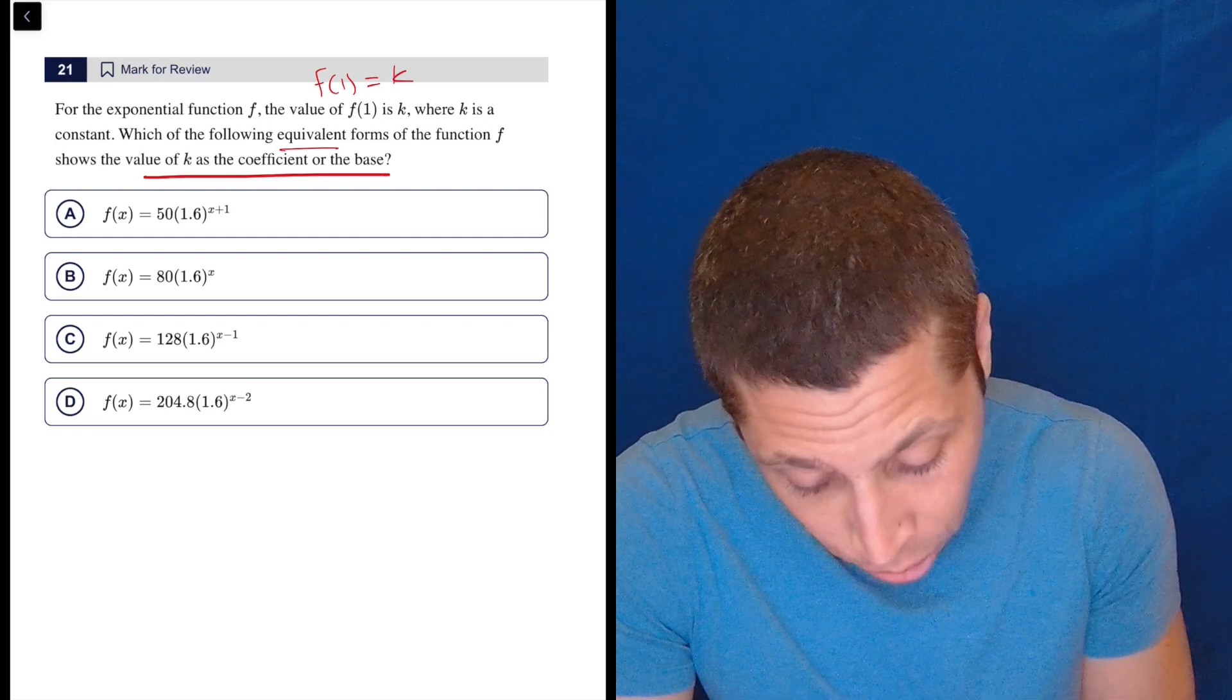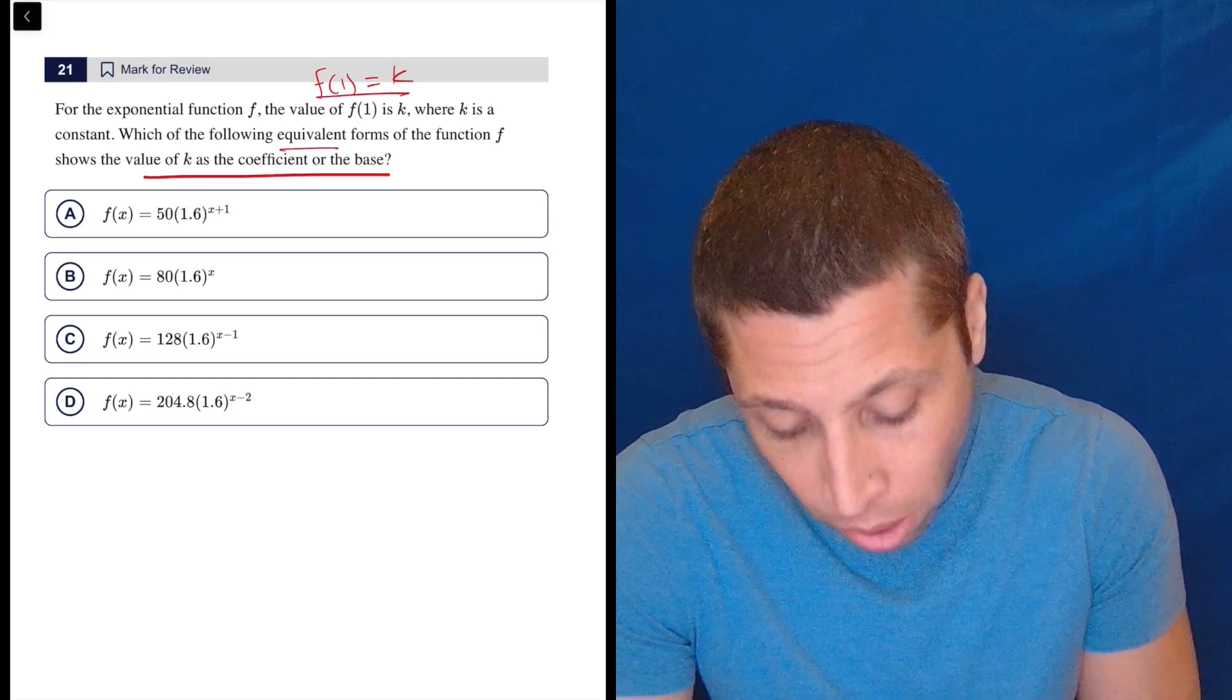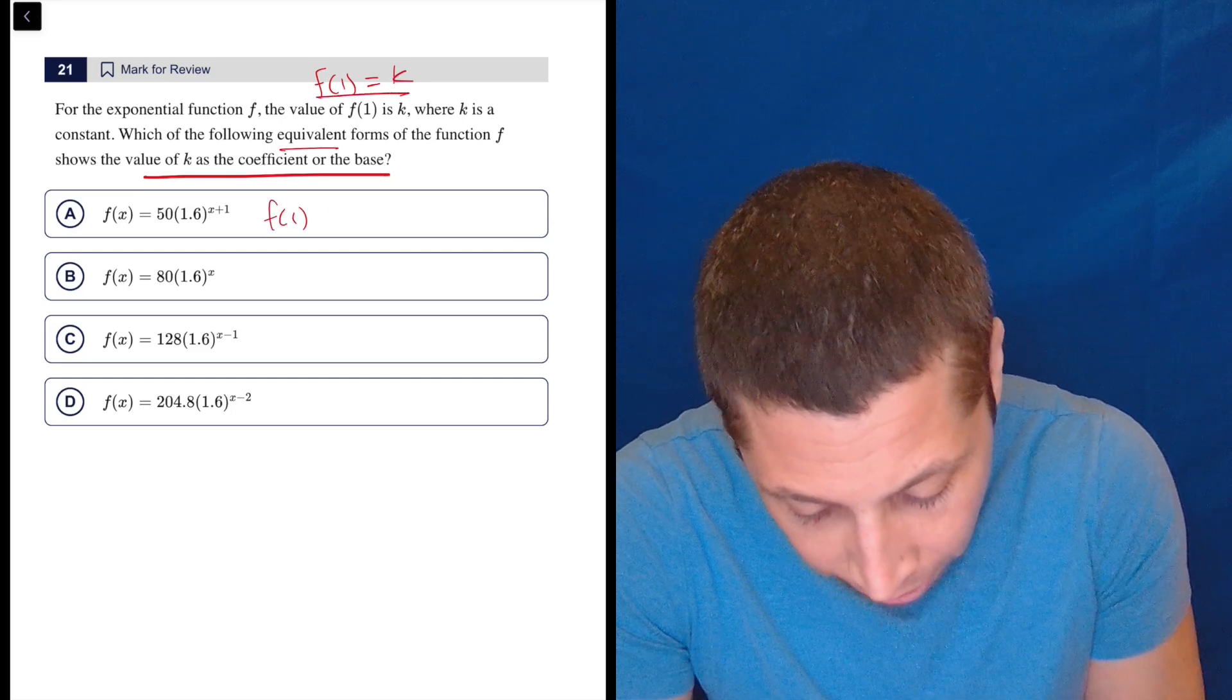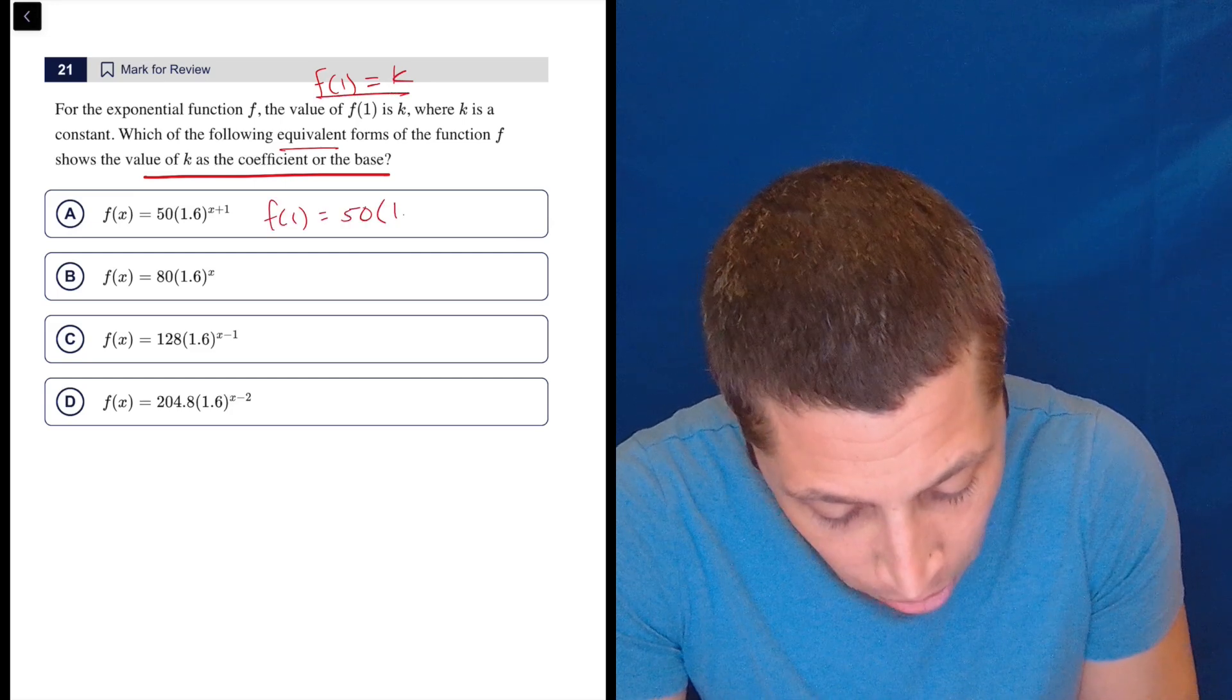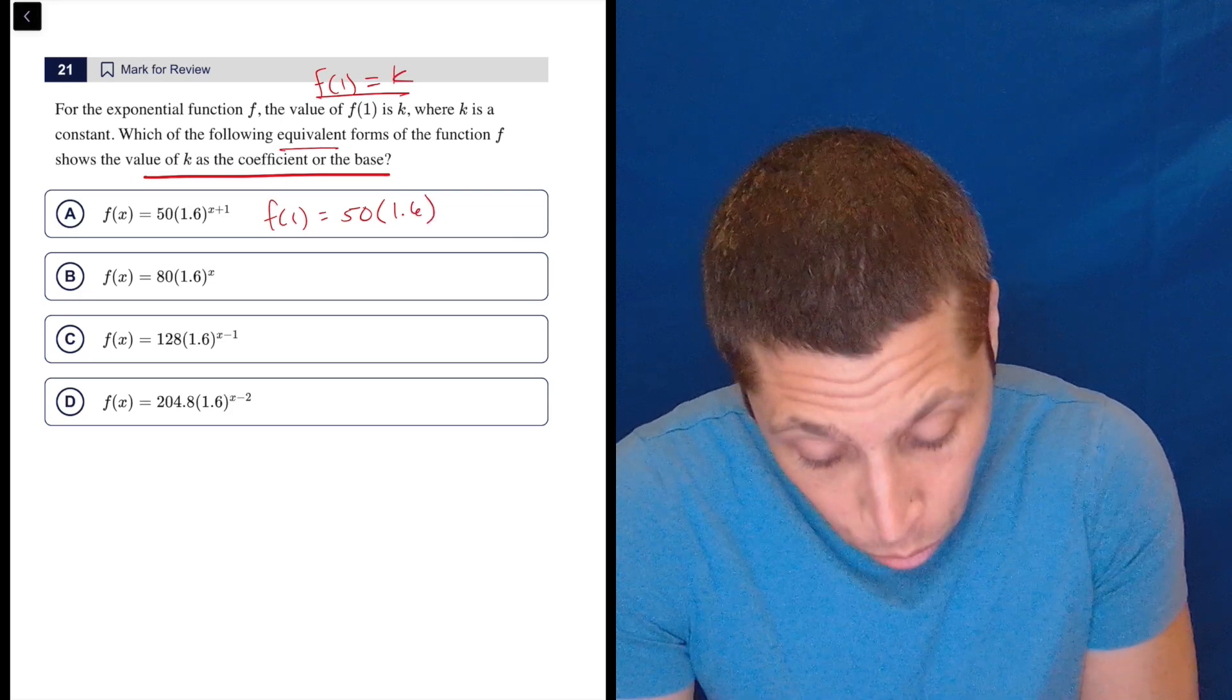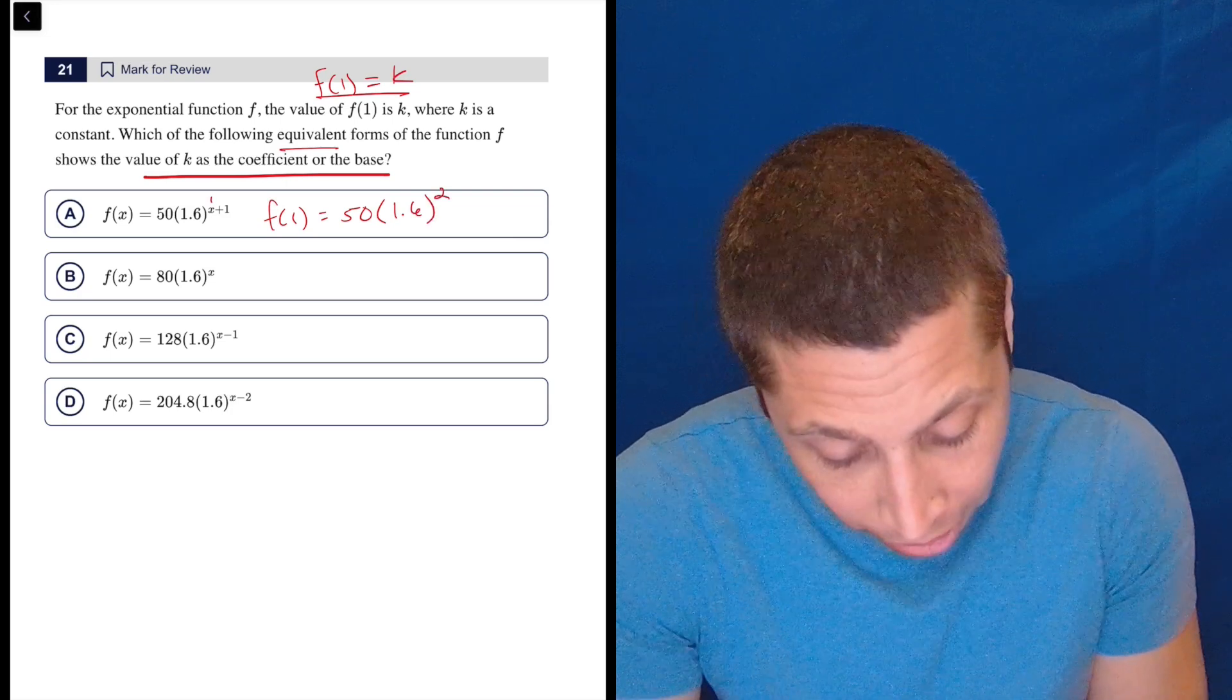So let's do choice A. Follow the instruction. Do f of 1. What is f of 1? So f of 1 is going to be 50 times 1.6 to the 1 plus 1, which is 2, squared.